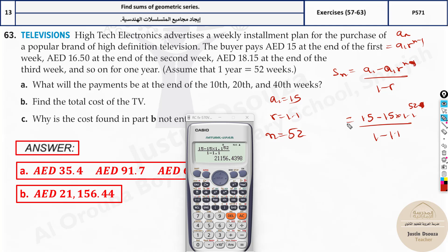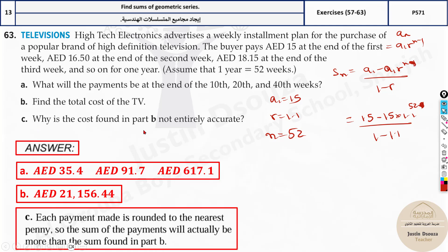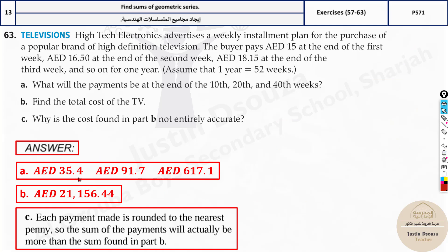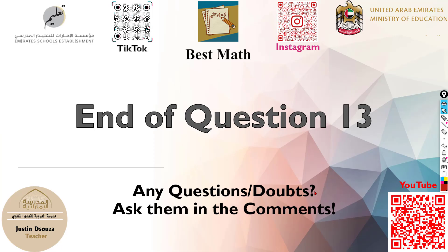Why is the total cost not entirely accurate? When paying in installments you round off each payment — instead of 91.7 dirhams you pay 92. Over 52 weeks these small rounding differences accumulate, so the actual total paid will be slightly more than the calculated sum. That's the end of question 13. Read each problem carefully, identify whether you need a_n or S_n, then use the proper formula.